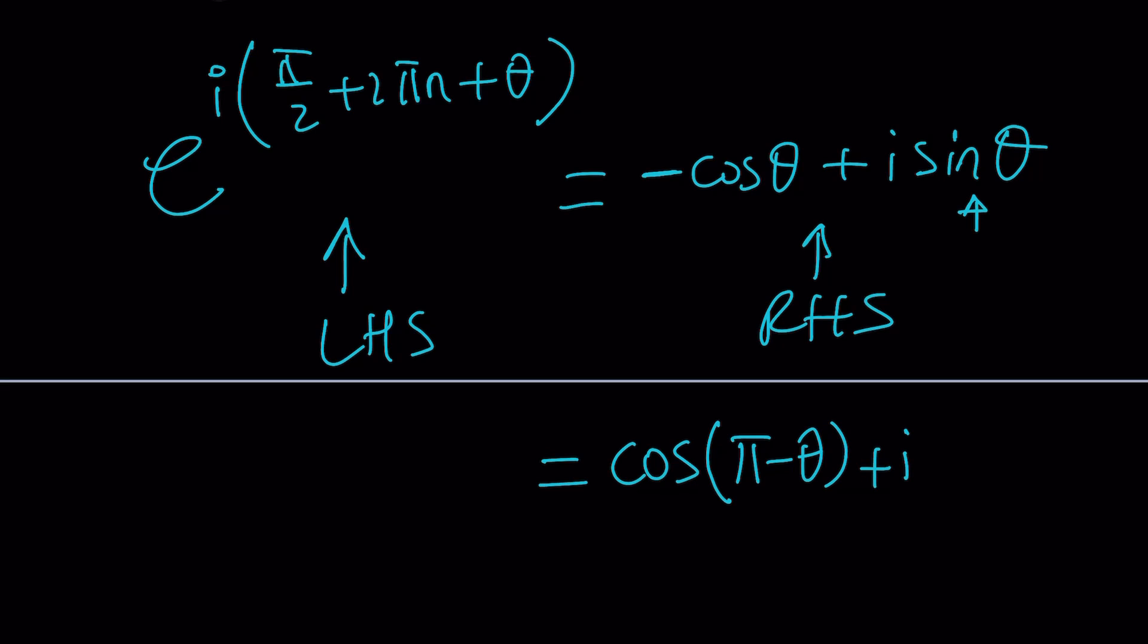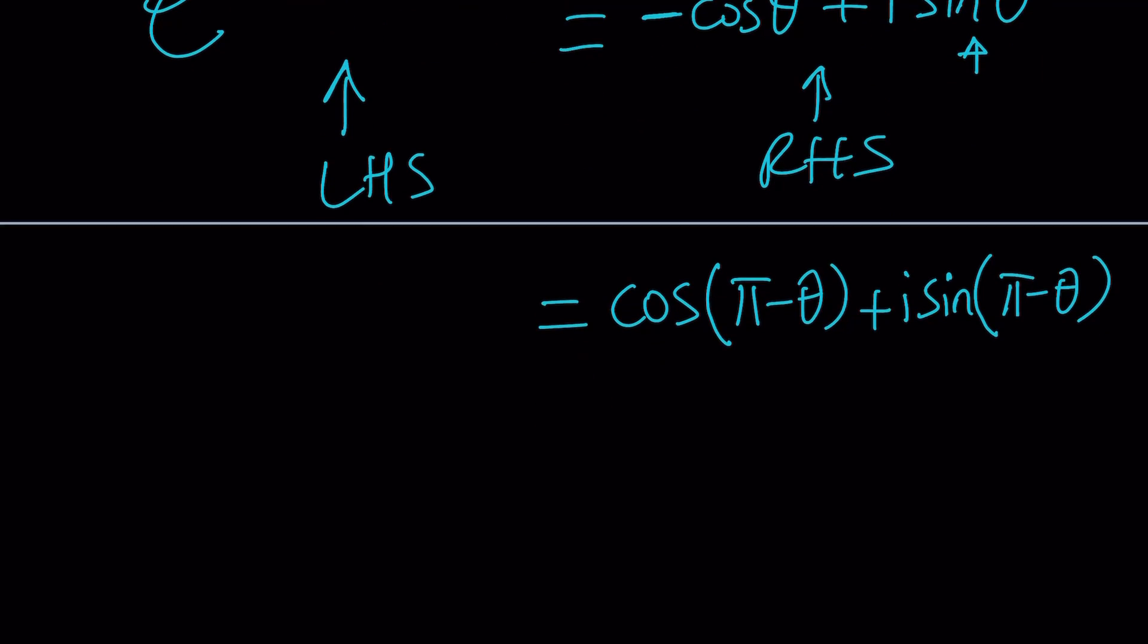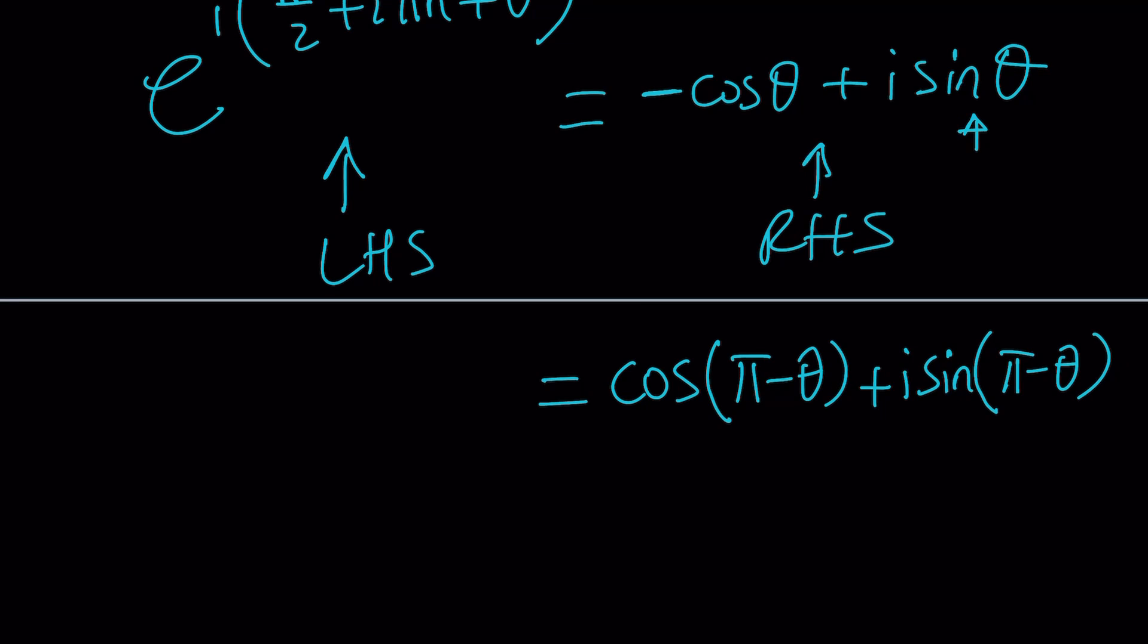Cosine of pi minus theta is going to be negative cosine theta. And sine of pi minus theta is the same as sine theta. Make sense? I changed the argument, but they have to be the same.